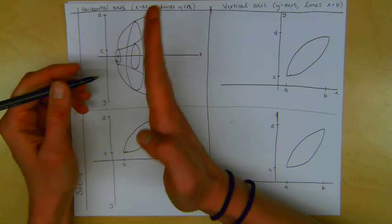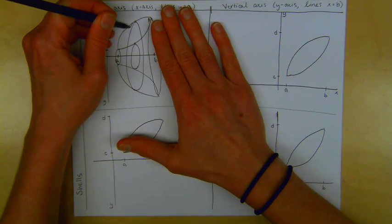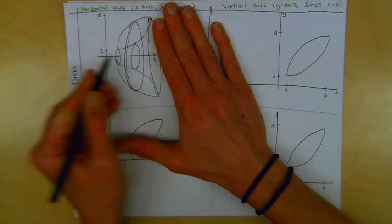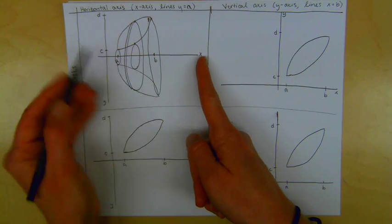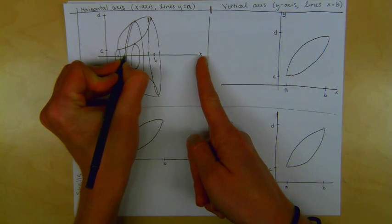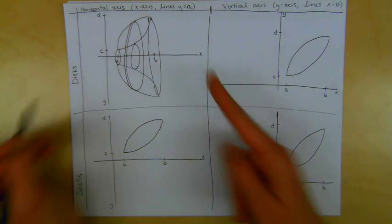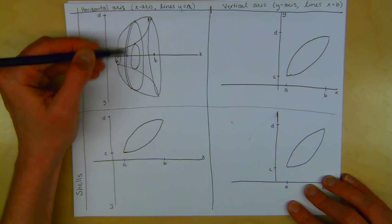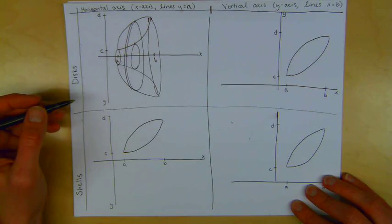Because we're doing discs, notice that this sample disc that I've sketched out has a width here. How wide is this? This width is a change in x-value. I notice that because I'm starting here on the x-axis and moving over some particular amount to end over here on the x-axis when I'm drawing this sample washer. That means I know my integral has to be with respect to x.